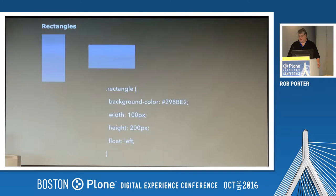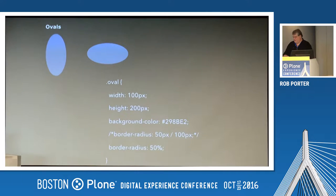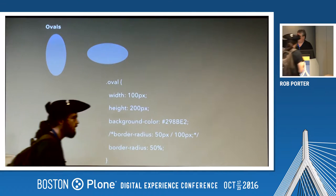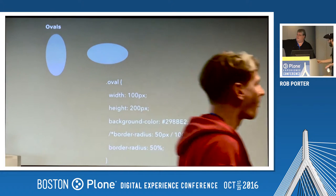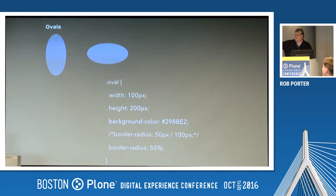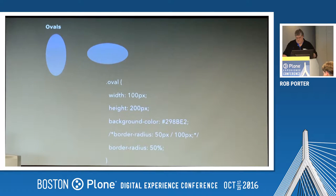An oval is a combination of circle and rectangle, where you'd use the border radius to be 50%. In this case, 50% of 100 is 50, and 50% of 200 is 100. But the trick is just to do border-radius 50%. Those are the easy, easy to understand ones.